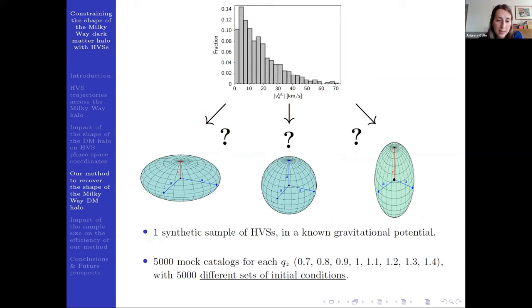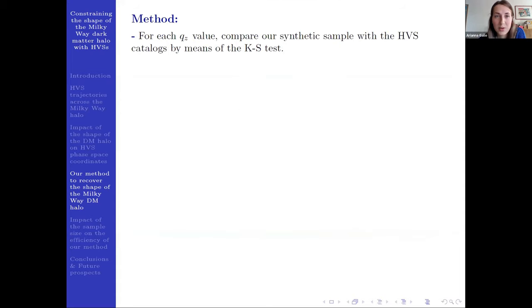And then we need a reference set of mock catalogs generated for each axis ratio we are investigating, and for each q_z we generate 5000 different sets of initial conditions. So our method works like this. For each q_z value, we compare our synthetic sample with HVS catalogs by means of the Kolmogorov-Smirnov test. And so for each axis ratio we are investigating, we obtain a distribution of 5000 p-values.